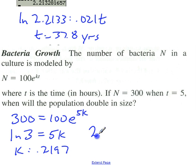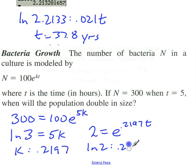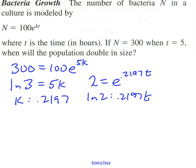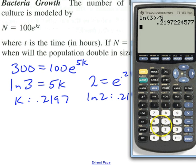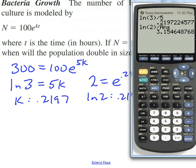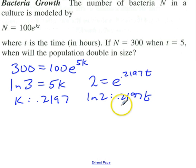So when will the bacteria double? We set 2 equal to e to the 0.2197t. The natural log of 2 equals 0.2197t. Dividing the natural log of 2 by 0.2197, we get about 3.15 hours.